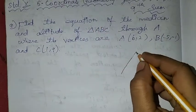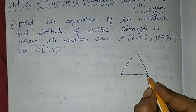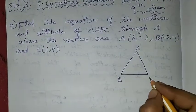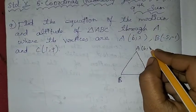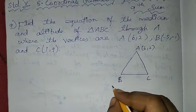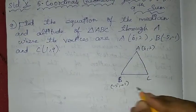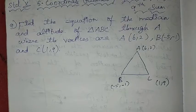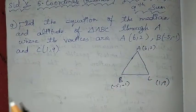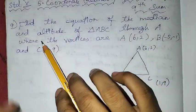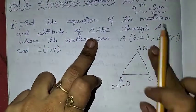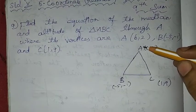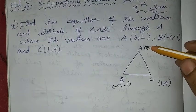We will be talking about the equation of the median and altitude of triangle ABC. A triangle has 3 medians and 3 altitudes.